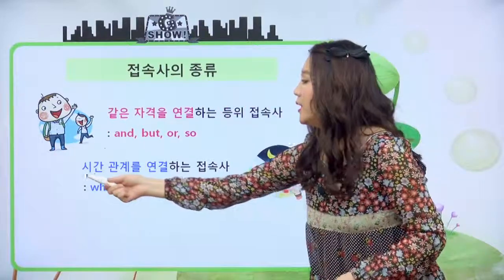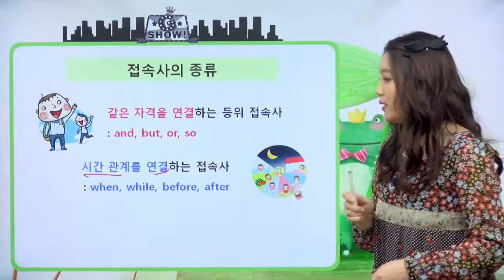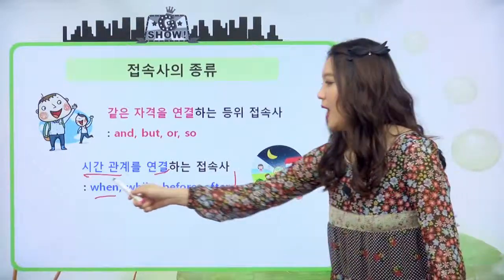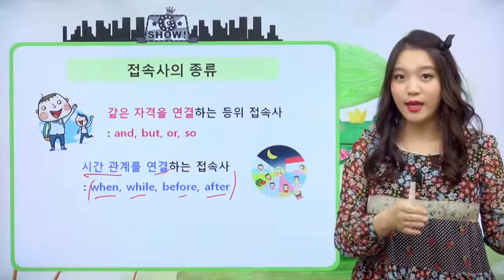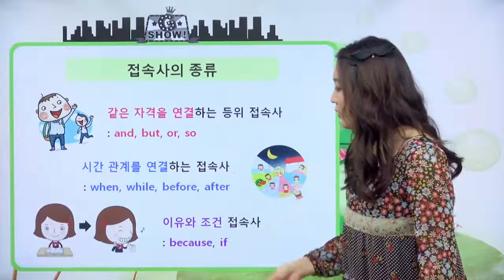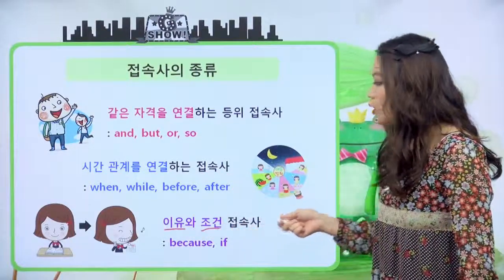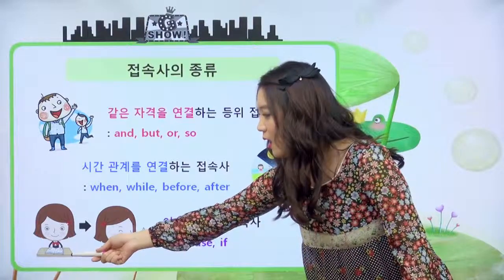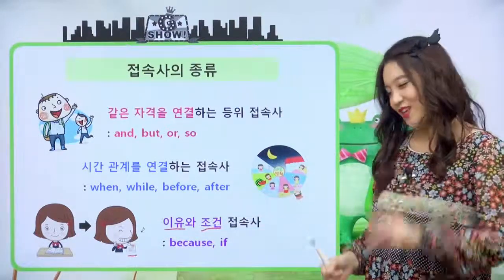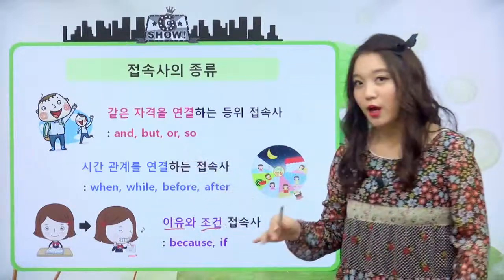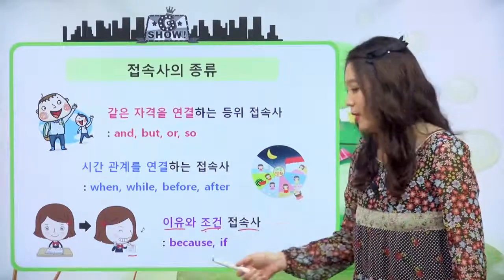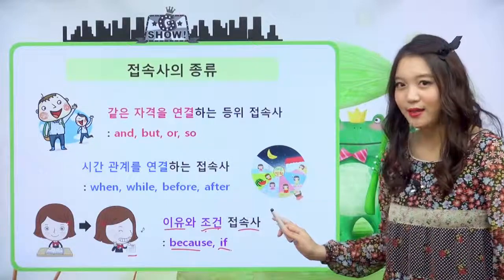두 번째는 시간 관계를 연결하는 접속사입니다. 어떤 거냐면 when, while, before, after, 이 네 가지가 앞뒤 문장에 시간 관계를 서로 연결하는 접속사예요. 세 번째는 이유와 조건 접속사예요. 지금 그림 보면 여자아이가 열심히 공부를 하고 있죠. 그래서 성적을 잘 받았어요. 이런 이유와 결과, 그리고 조건을 나타내는 접속사입니다. because, if 이런 아이들이 해당돼요.